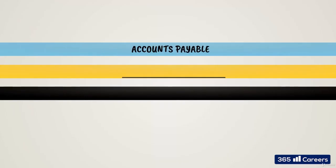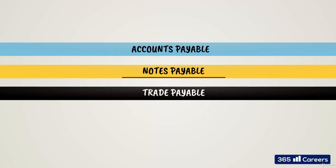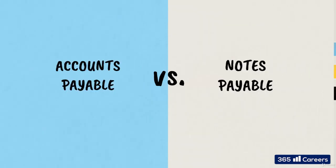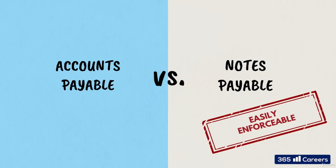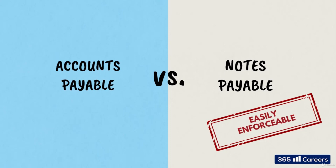Both accounts payable and notes payable are grouped and shown as trade payables on the liability side of the balance sheet. The fundamental difference between the two is that the payment of notes payable is much more easily enforceable, and we are certain it will occur. Invoices can be disputed and renegotiated, whereas there is no reason to renegotiate a promissory note the debtor has signed.